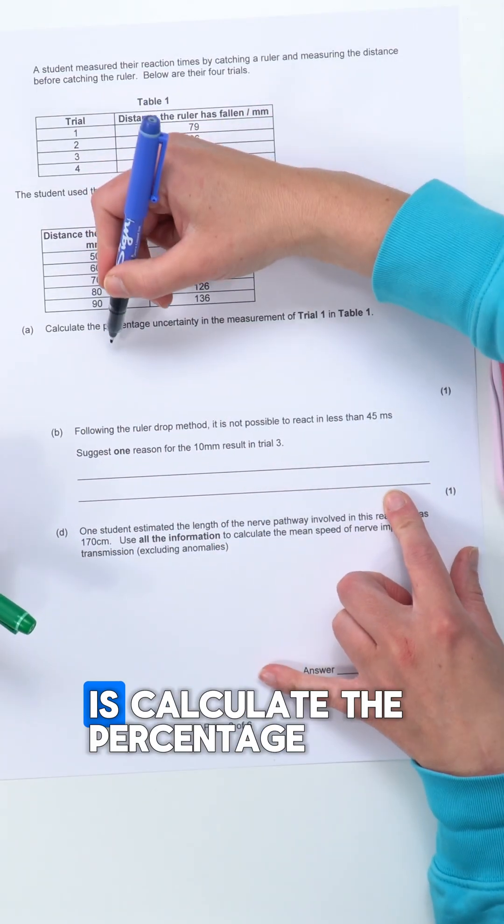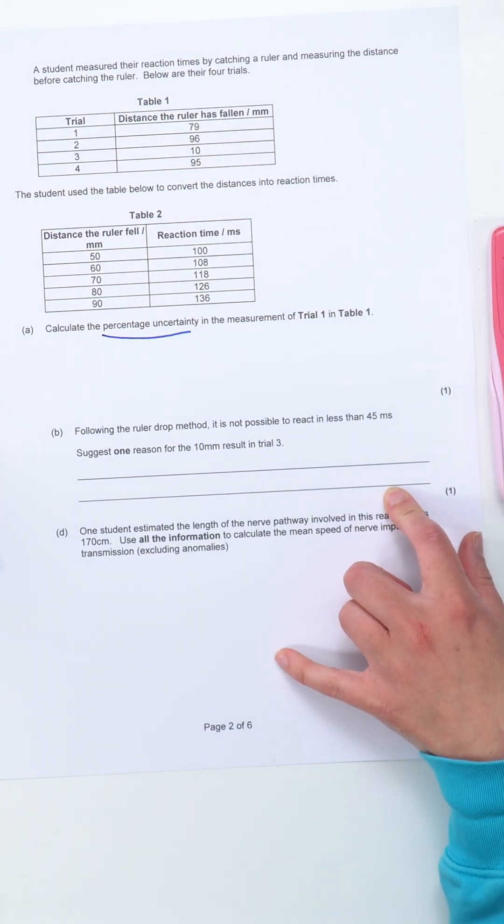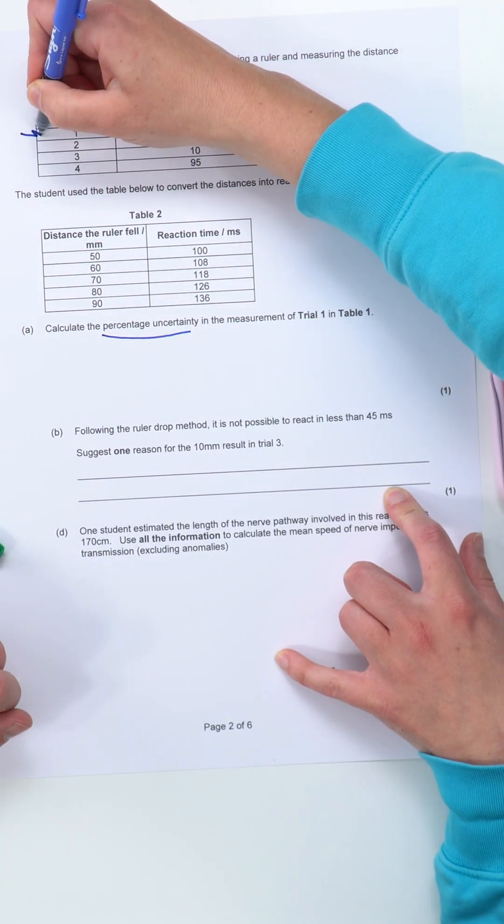And the first thing we have to do then is calculate the percentage uncertainty in the measurement of trial one in table one.